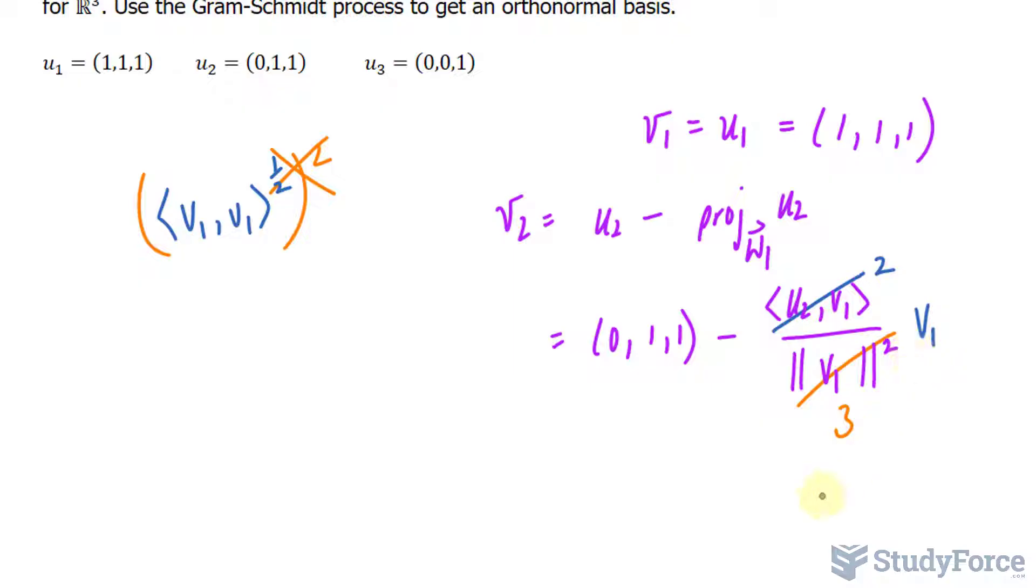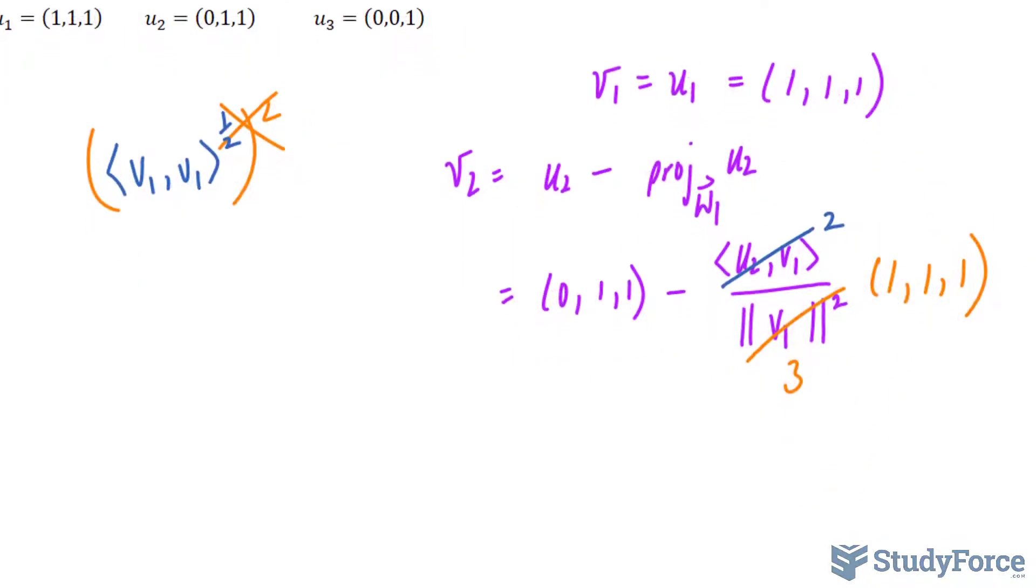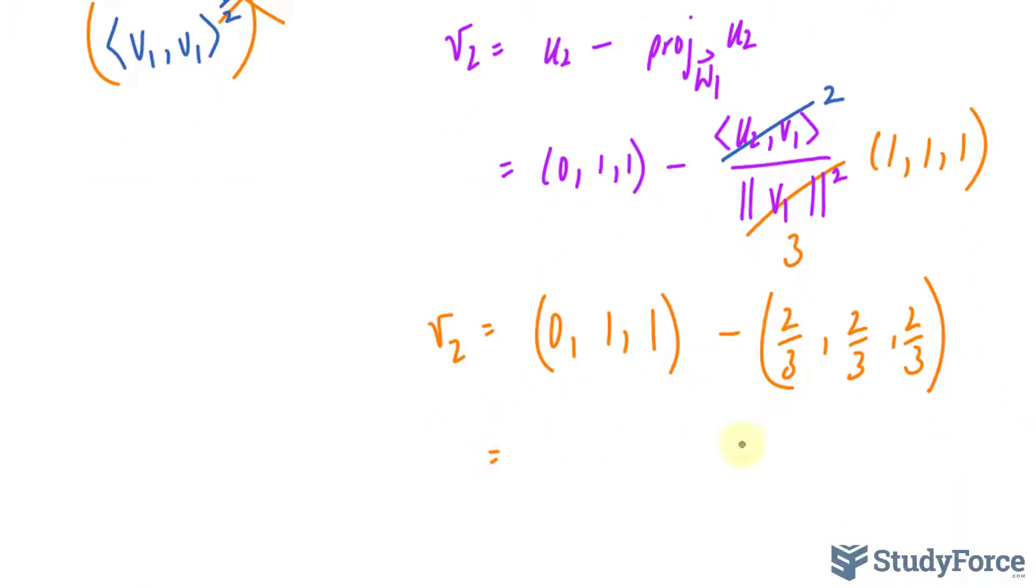We have 2 over 3 times the vector V1. Let me just replace that with its components. To find V2, we have to subtract this vector with 2 over 3 times this vector. I have 0, 1, and 1, minus 2 over 3, 2 over 3, 2 over 3. 0 minus 2 over 3 is negative 2 over 3. 1 minus 2 over 3 is negative 1 over 3, and 1 minus 2 over 3, again, is negative 1 over 3. That right there is V sub 2.